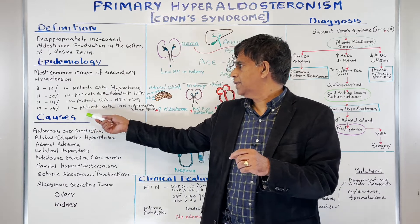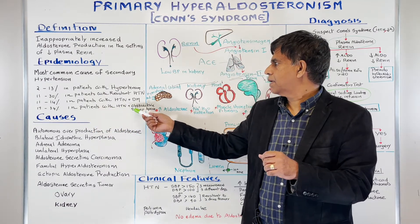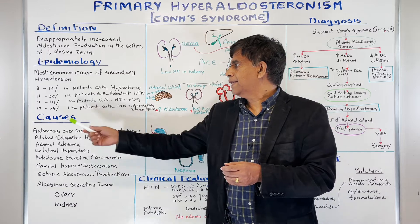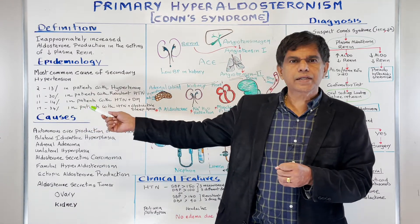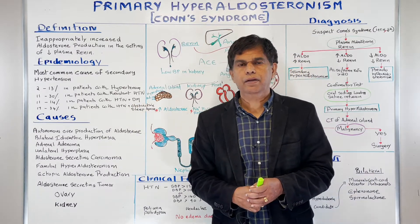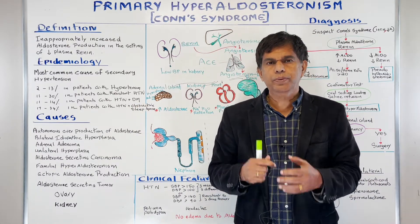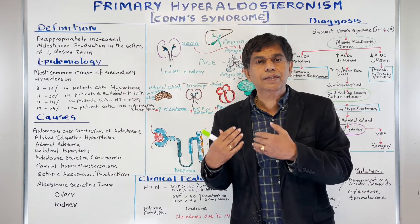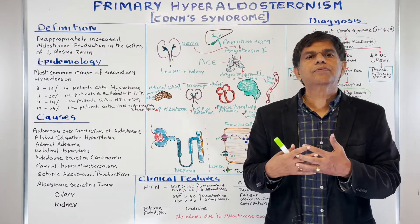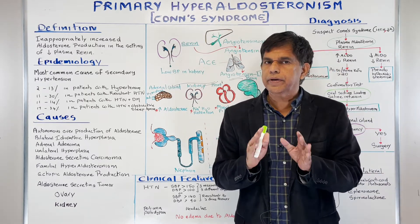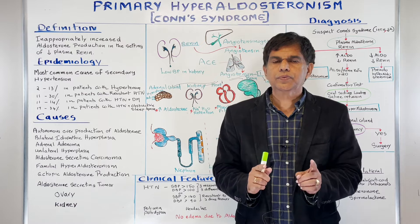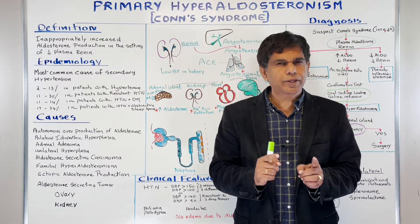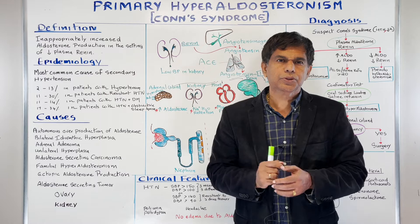The prevalence is 11 to 14% in patients who have hypertension and diabetes. And 17 to 34% — the highest — if someone has hypertension and obstructive sleep apnea. So if you have an obese patient who is snoring with high blood pressure and obstructive sleep apnea, 34 of 100 can have primary hyperaldosteronism. So always ask: does this patient have Conn's syndrome?